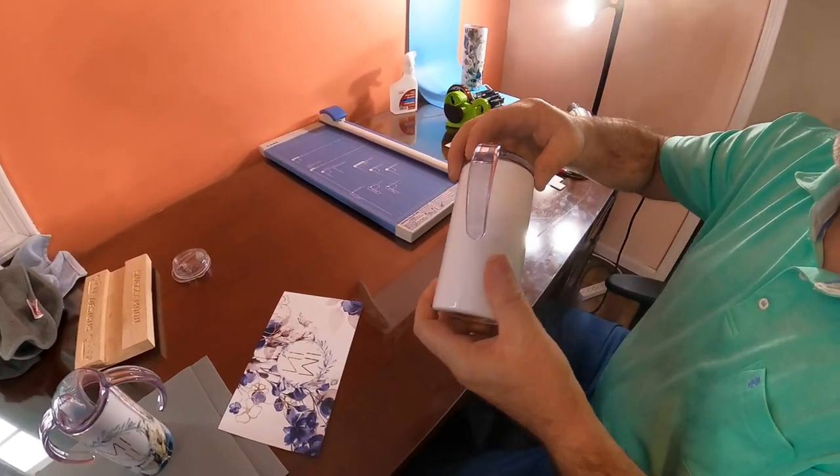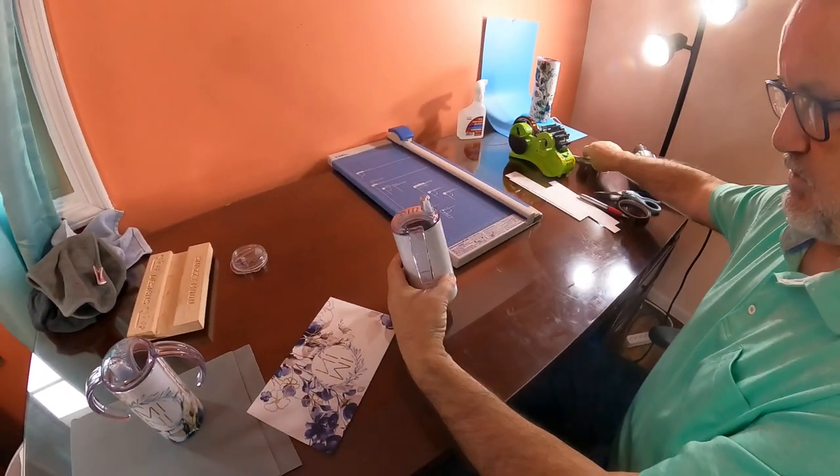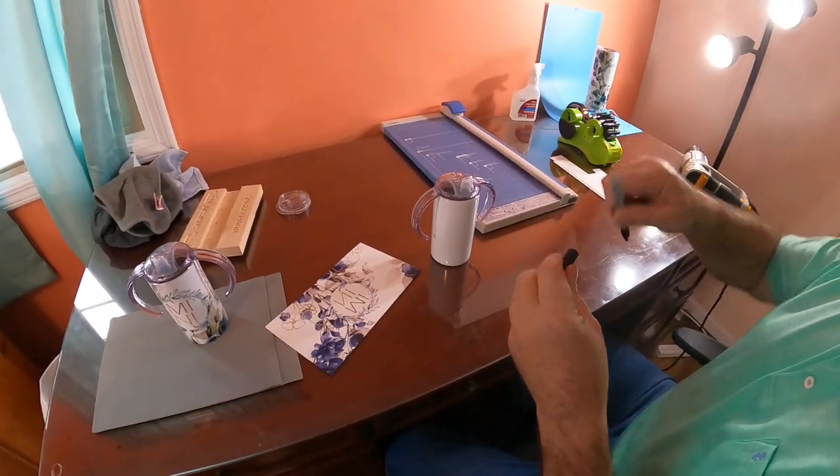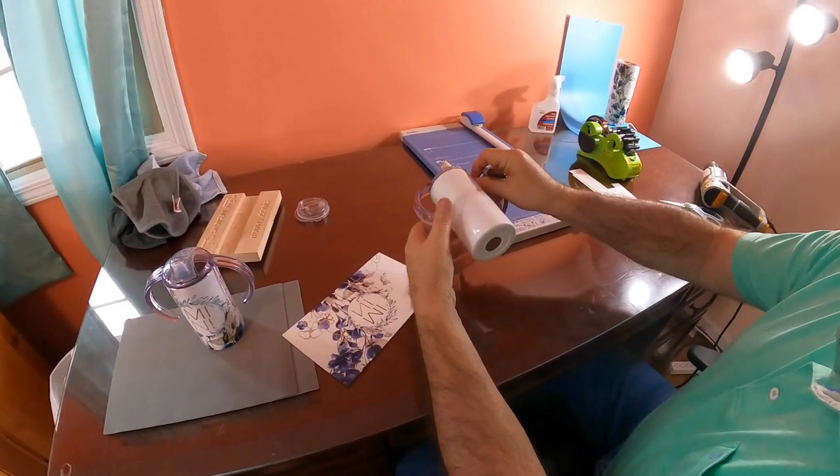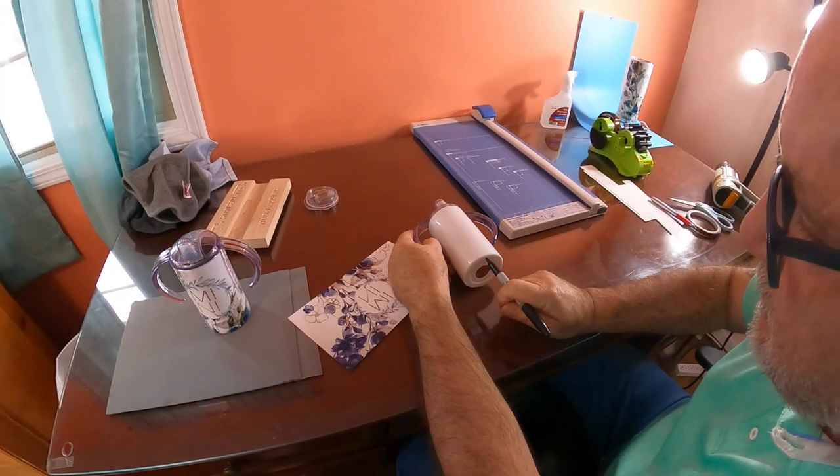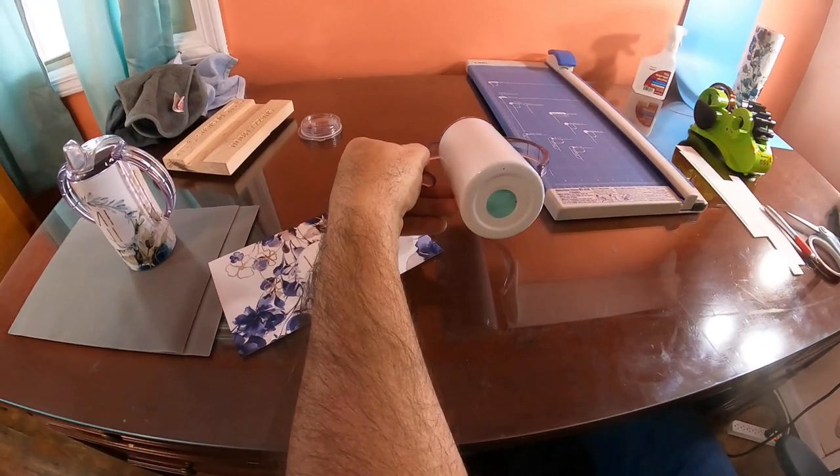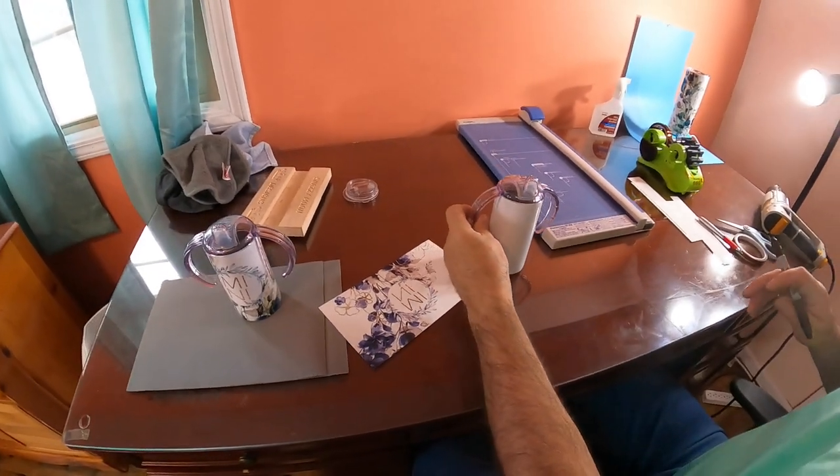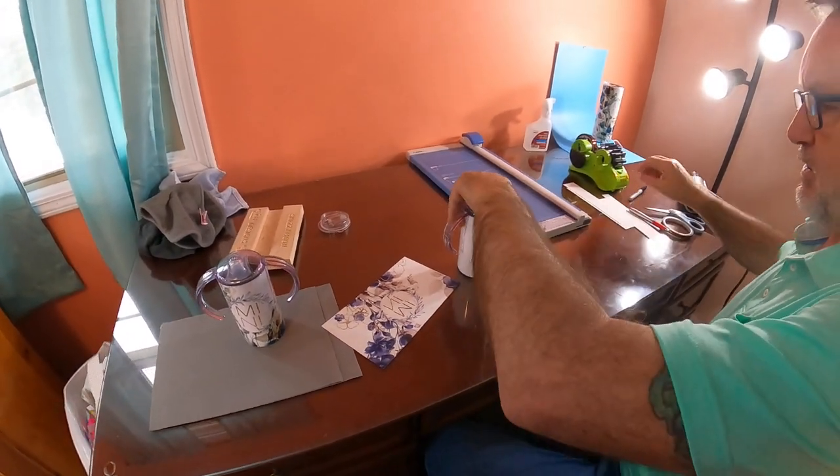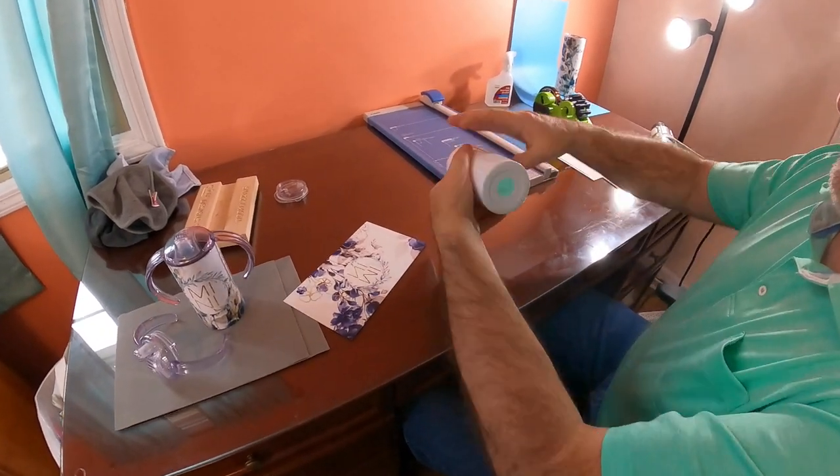So what I do is first you got to take your top, your sippy top, and screw it on, that way you know where the front's going to be. Then I take a marker and I turn it on its side like this and I just put a little black dot like that.